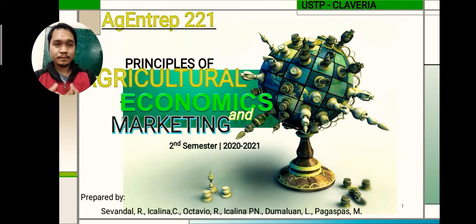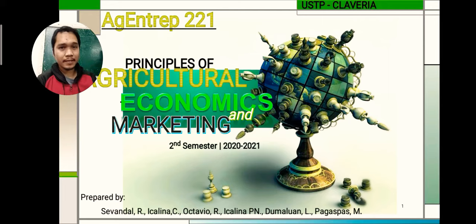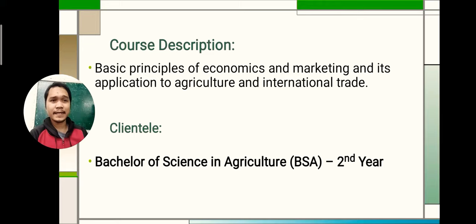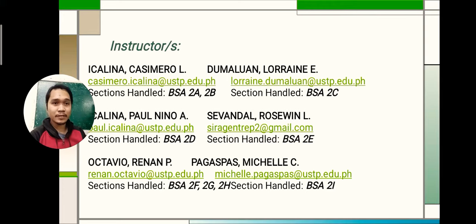Hello, good morning everyone. I am Rosewin Asevanda, one of the instructors in AG and TRIP 221 — the Principles of Agricultural Entrepreneurship or Economics and Marketing. This subject is offered for this semester, second semester, school year 2020-2021. The description covers the basic principles of economics and marketing and its application to agriculture and international trade. It is offered to Bachelor of Science in Agriculture second year students.